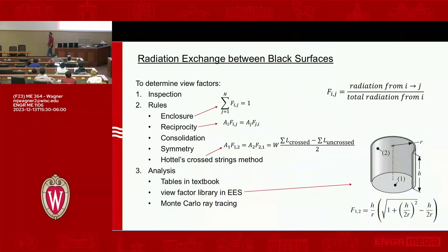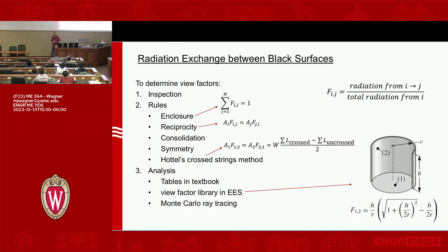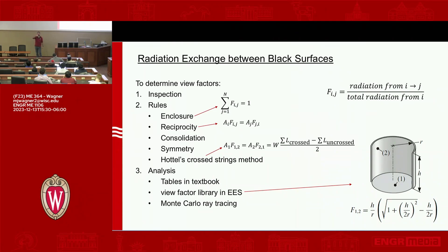Radiation exchange between black surfaces starts with how much one surface sees another — we call that the view factor. A view factor is a value between zero and one, representing the fraction of light that, if it leaves surface one, hits surface two. Note that view factors account for the entire emitting surface area, not just the projected area. For example, a cylinder emits from its full circumference — all surfaces around it. The view factor is the fraction of that total field of view going to a specific target surface.